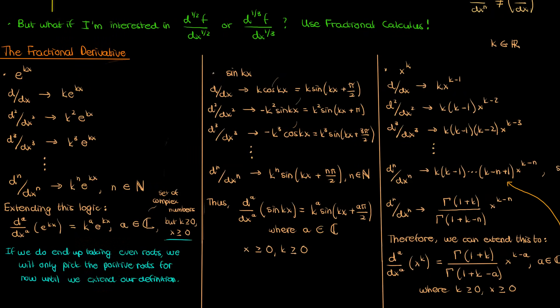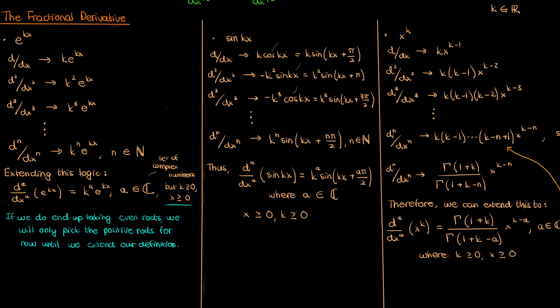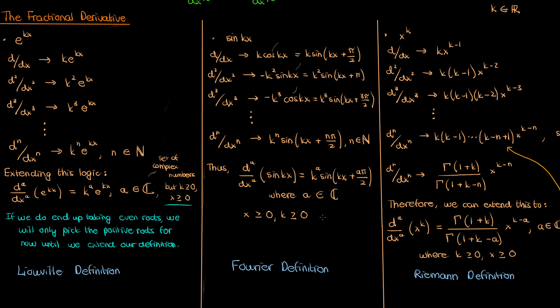So now we have three formulas for the fractional derivatives of different functions: the exponential, the sine, and x to the k. These three formulas each give rise to different definitions of the fractional derivative depending on how you express your generic function f of x. The exponential formula gives rise to the Liouville definition, the sine formula gives rise to the Fourier definition, and the x to the k formula gives rise to the Riemann definition.